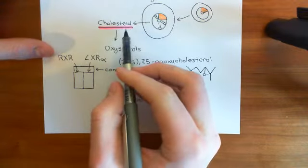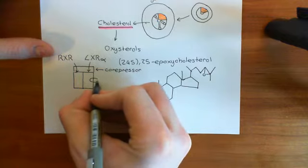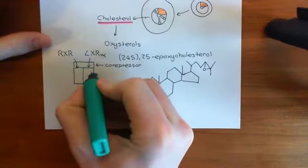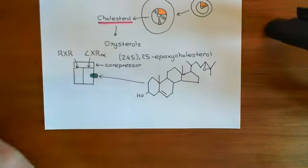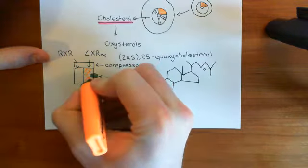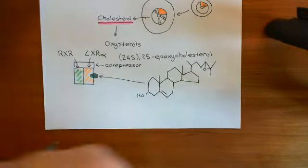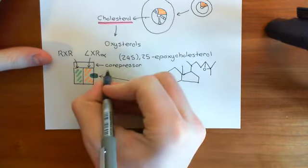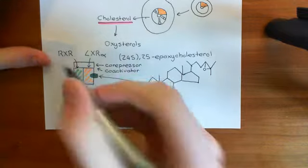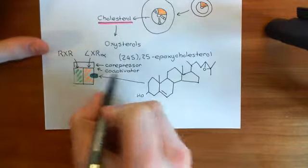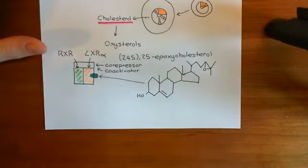However, when cholesterol is high within the cell, you'll produce oxysterols such as 24S,25-epoxycholesterol, and the oxysterol can then bind to the liver X receptor. You'll shed the co-repressor and replace it with co-activator proteins. This complex now activates those same genes that it was previously repressing, so that you express more of them.